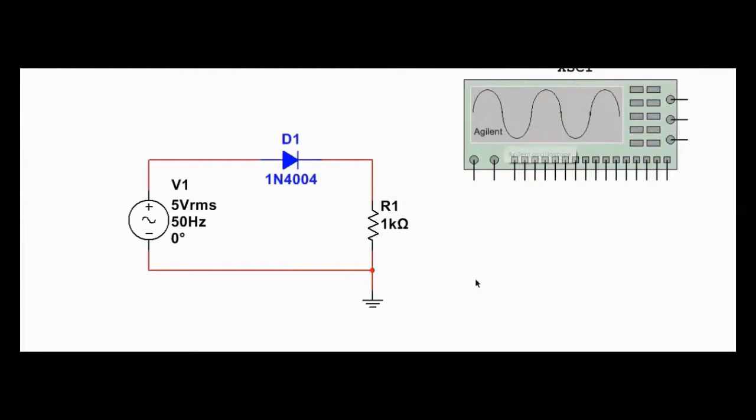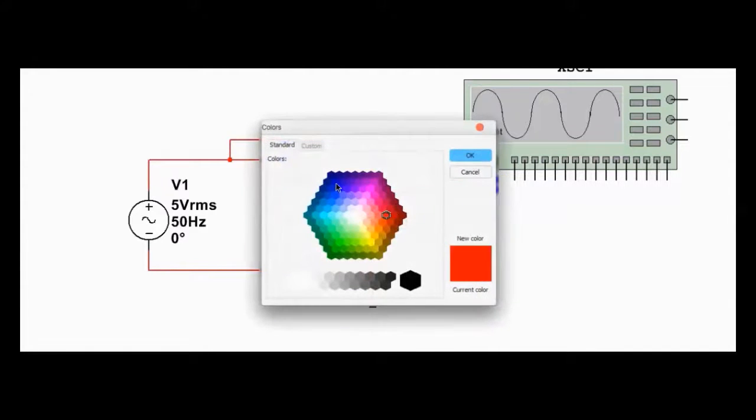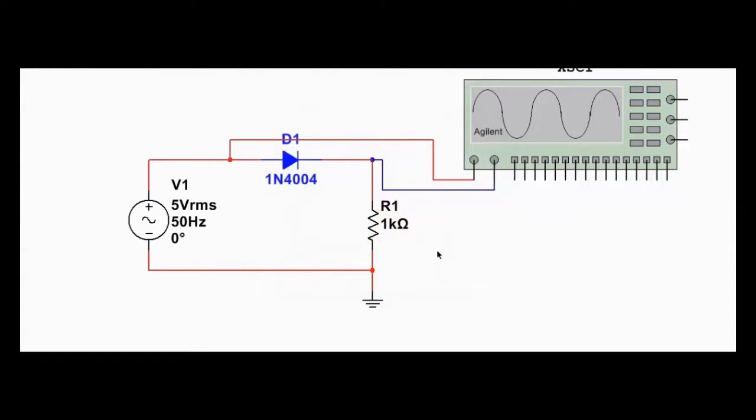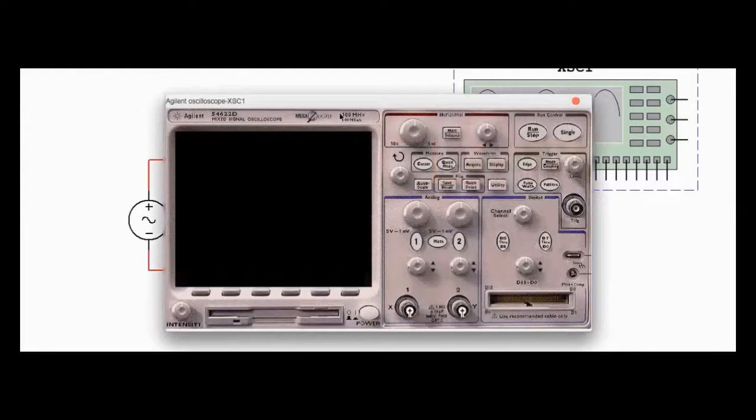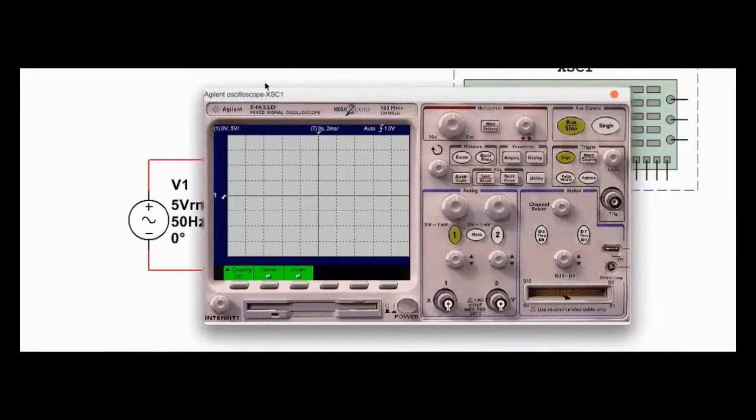Alright, so we're going to use this here to monitor the input, which is here. And this will monitor our output, which is here. So let's change this color here to something more interesting, like blue. Okay, so this input here is monitoring the input, and this is monitoring the output. So let's get our oscilloscope turned on and activate the circuit.